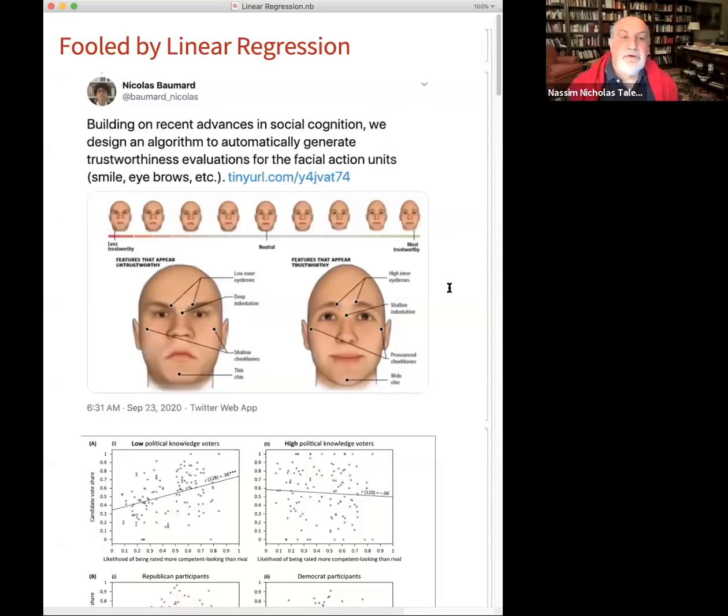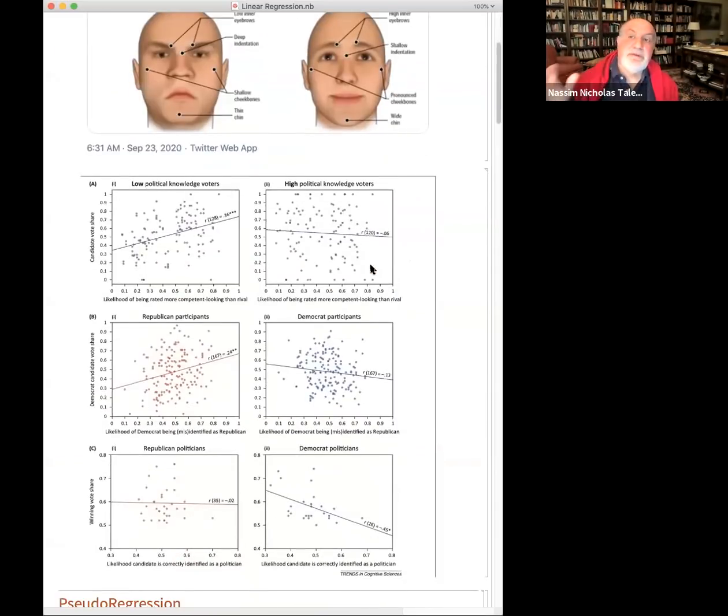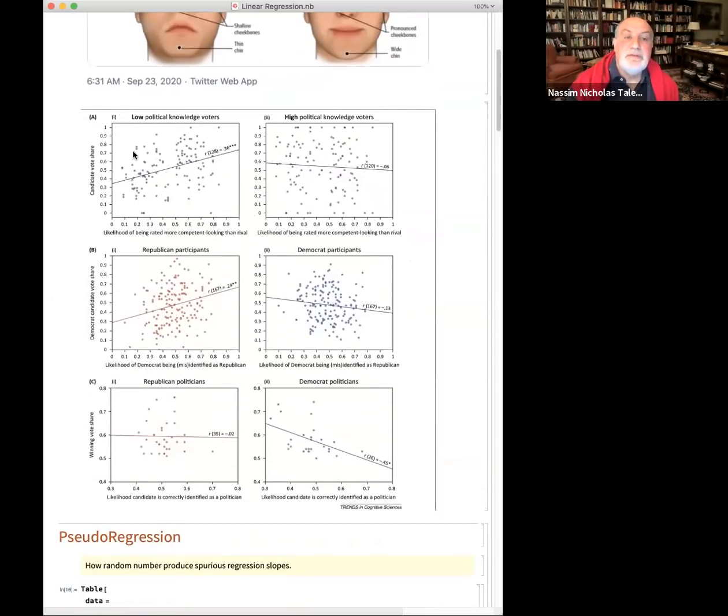This is a very simple example. You don't need to know a lot of math to understand the story. A fellow called Nicolas Baumard and colleagues, and of course there's a class of other people also involved in that kind of sinister game, finding links between trustworthiness of individuals and their facial characteristics.